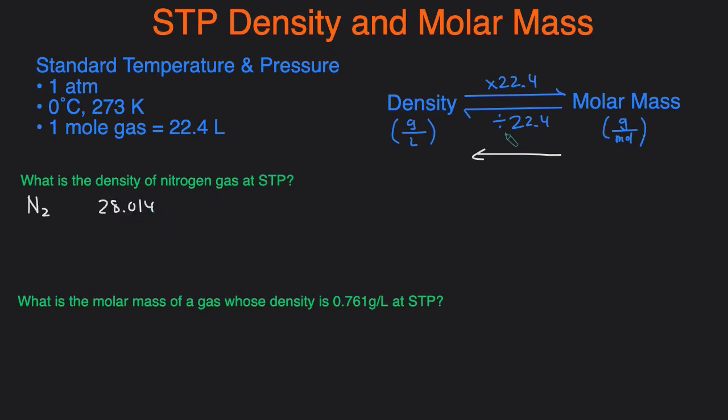So we have the molar mass, we just have to divide that by 22.4 and then we'll get the density. And then when we do that we get 1.25 grams per liter because that's the units for density.